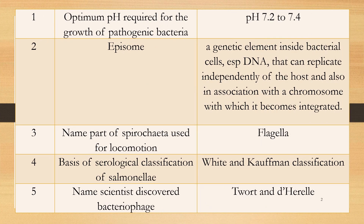Question 1: What is the optimum pH required for the growth of pathogenic bacteria? The optimum pH should be 7.2 to 7.4.